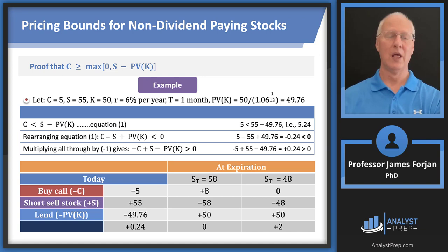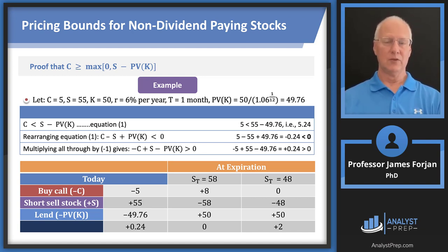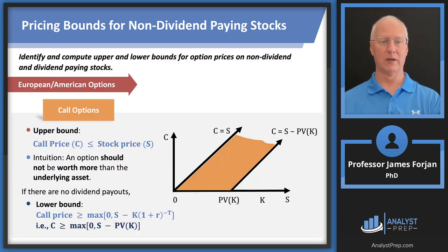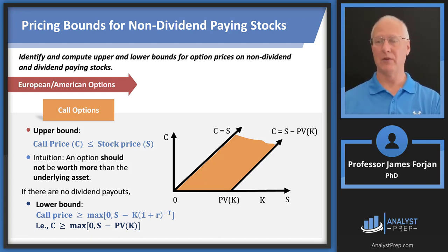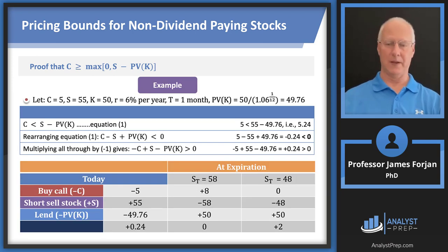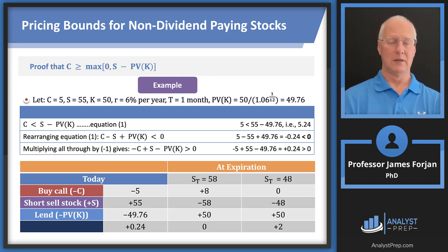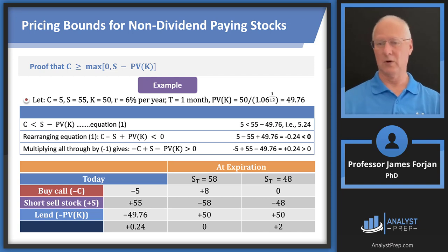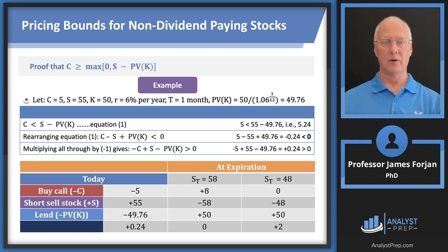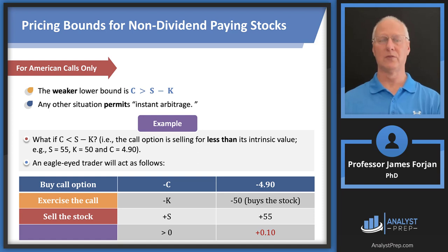This example illustrates why the lower bound for the call has to be in place. If it weren't, somebody would be making $0.24 and $2 continuously. Remember, this is a zero-sum game — somebody would be losing those amounts. Any violation permits an instant arbitrage, and no rational option writer, typically a financial institution, would ever sell a call for less than its intrinsic value.